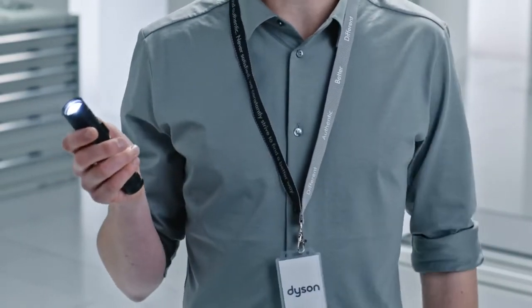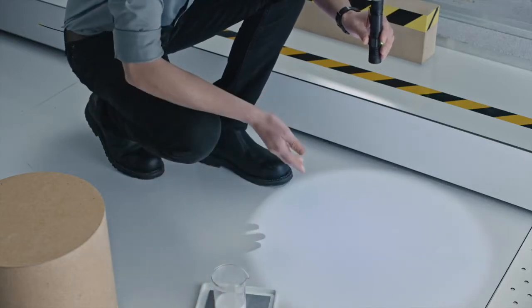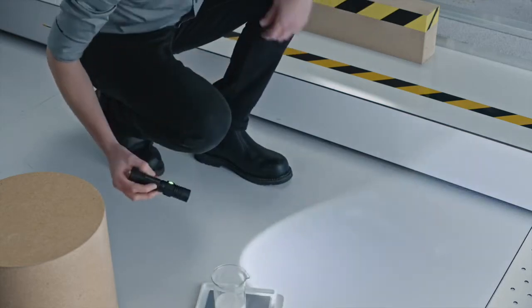Some vacuums use LED light to see hidden dust. But all that does is light everything, the dust and the surface. Changing the angle helps, but it still lights up the surface, so it's difficult to make out what's there.